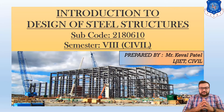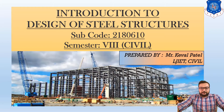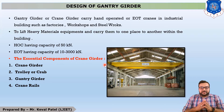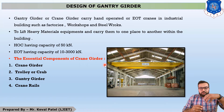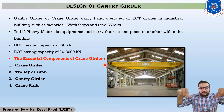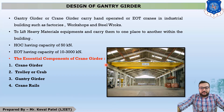Hello students, this is our second lecture of chapter number 5, which is the design of gantry girder. In the last lecture, we discussed what a gantry girder is. In industrial buildings, heavy loads are lifted from one place to another with the help of a crane girder. You can see that in this figure, your crane girder is this.